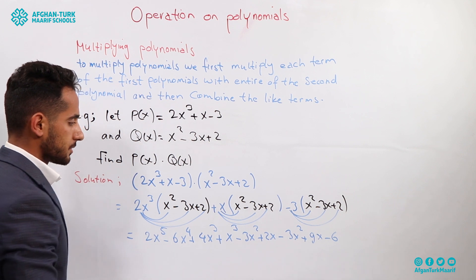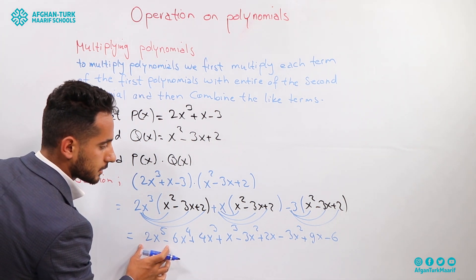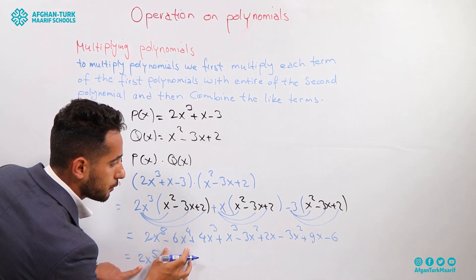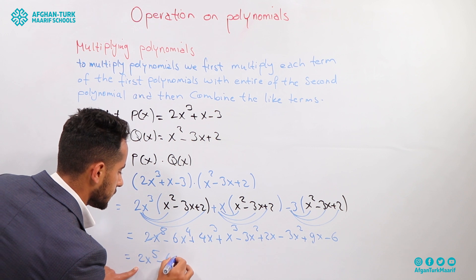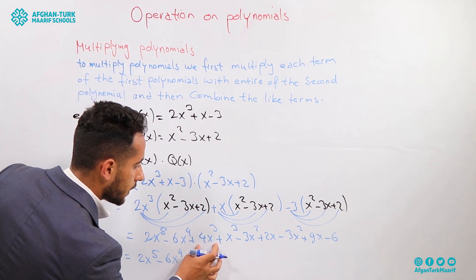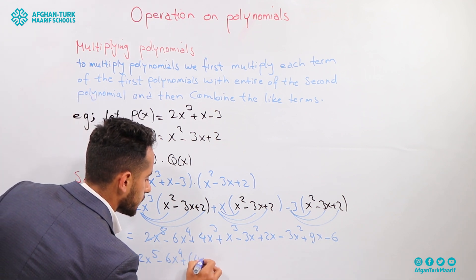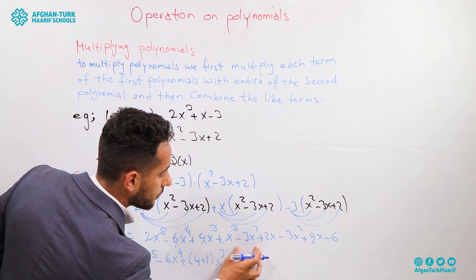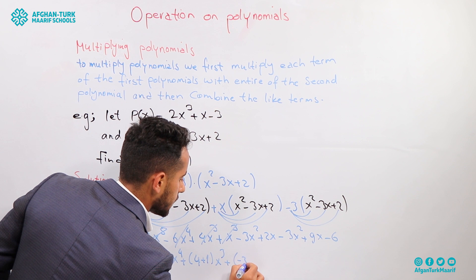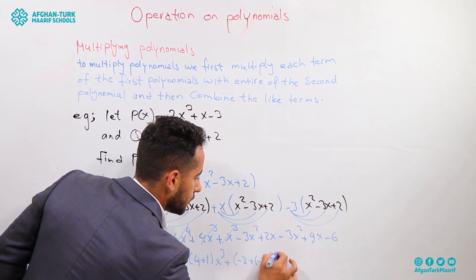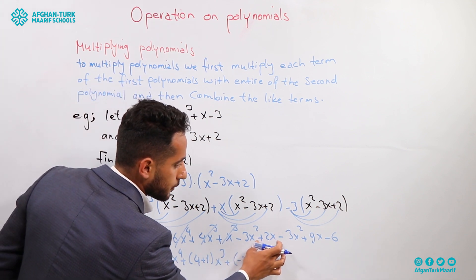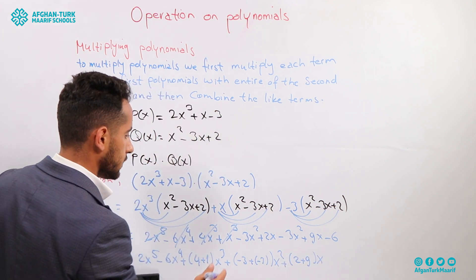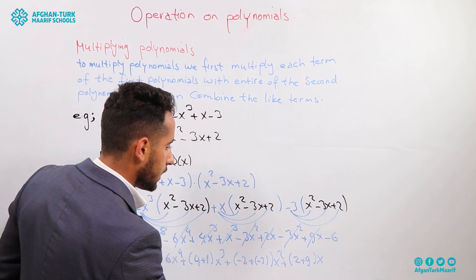Then we combine the like terms. 2x⁵ has no other term, so we write it as is. Negative 6x⁴ has no other term, so we write it as is. 4x³ and x³ have the same degree, so we add them: 4 plus 1 gives 5x³. Negative 3x² and another negative 3x² have the same degree, so we add them: negative 3 plus negative 3 gives negative 6x². We have 2x and 9x — same degree, so 2 plus 9 gives 11x.